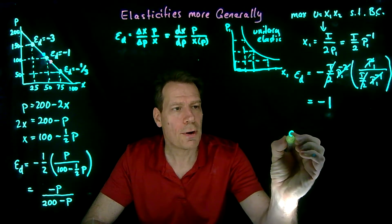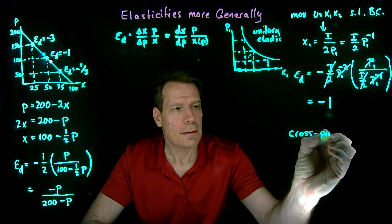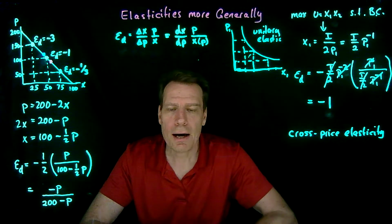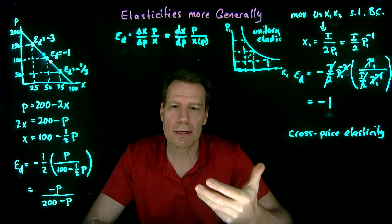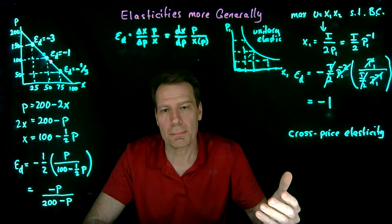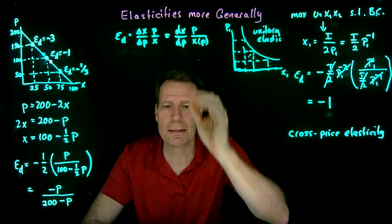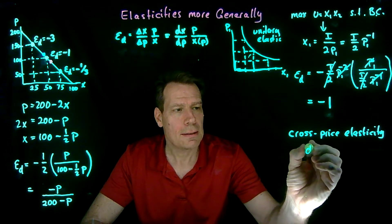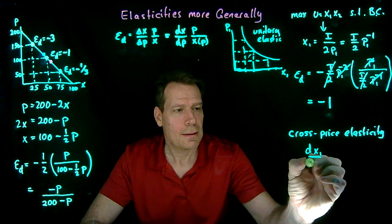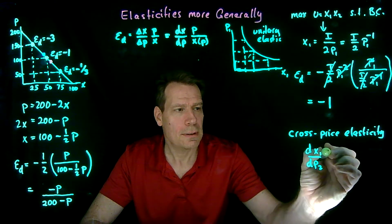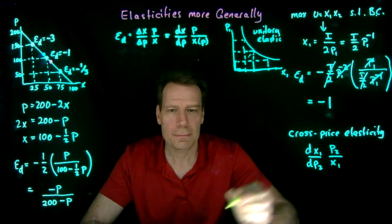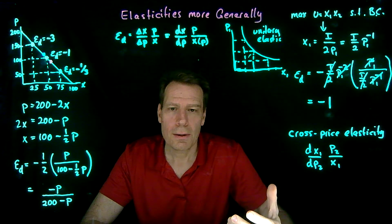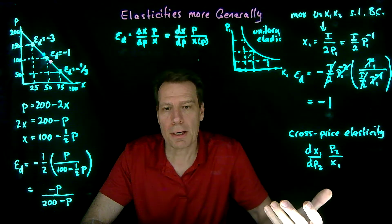We can also think of a cross-price elasticity. A cross-price elasticity simply thinks about how responsive is the consumer in terms of the consumption of X1 when the price of another good, the price of good 2, changes. And we'd use exactly the same formula, except we'd have different subscripts. So it would be DX1 with respect to DP2 times P2 over X1. Just what's the percentage change in my consumption of the good X1 when the price of the good 2 changes by a percent?